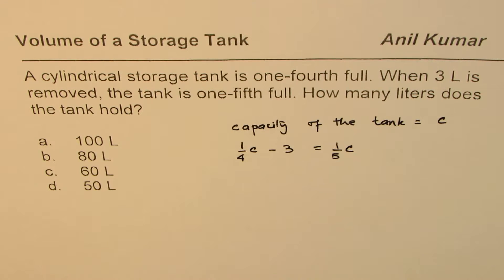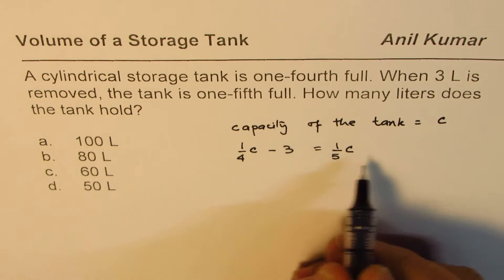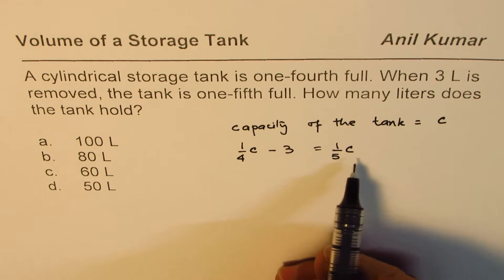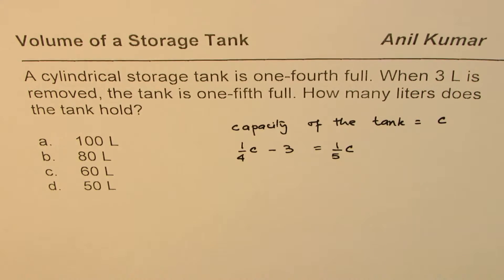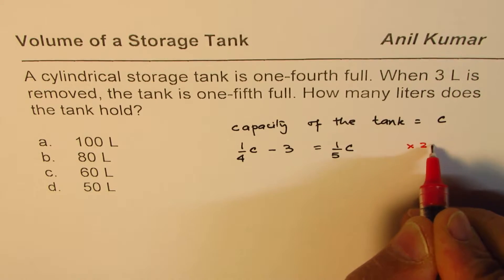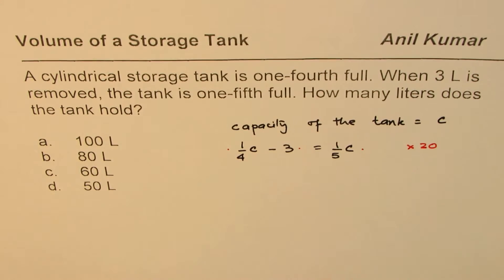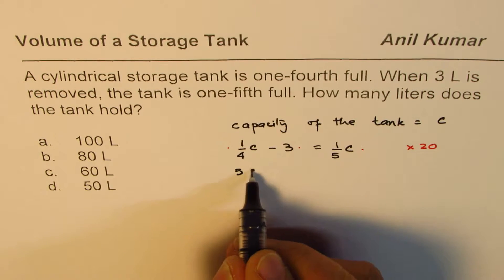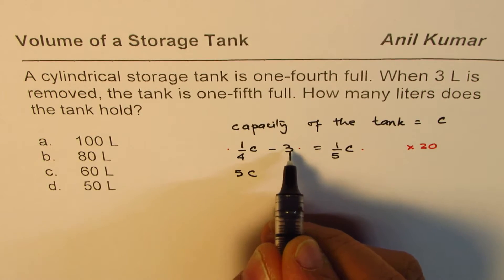Once you get an equation, it's simpler to find the solution. Now to solve an equation with fractions, what should we do? Get rid of fractions, that's the strategy. So multiply by 20 all the terms. So basically what we'll get: we'll get 5C here, 20 times 3 will give us 60.